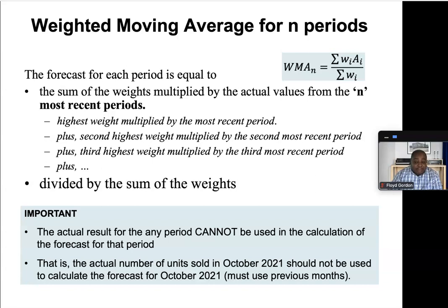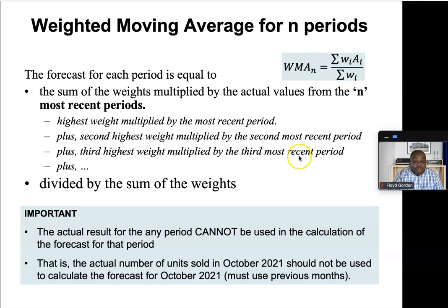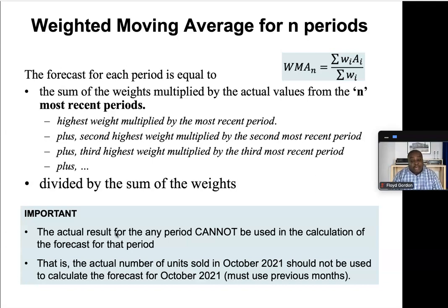We total them, then divide by the sum of the weights. Importantly, we're going to multiply the highest weight by the most recent period. So if it's months, the highest weight is multiplied by the most recent month, the second highest weight by the second most recent month, and so forth. We then divide by the sum of weights. Remember: we cannot use the actual result for any period to forecast the same period. If we are forecasting October 2021, we must use months before — we use the past to forecast the future.